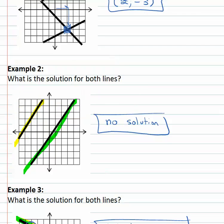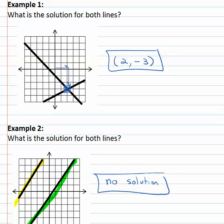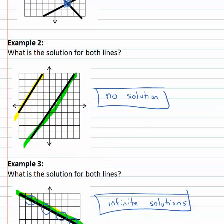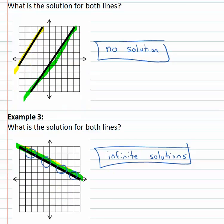So we really have three possibilities. The lines could intersect, giving us one solution. The lines could be parallel, giving us no solution. Or they could be the same line, giving us infinite solutions.